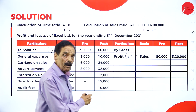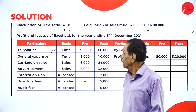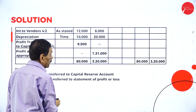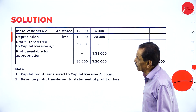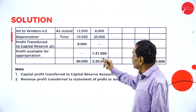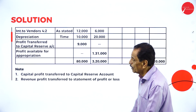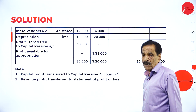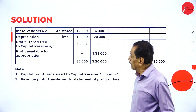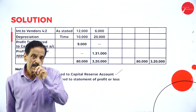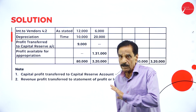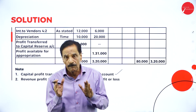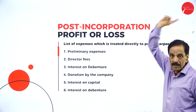After adding all figures: the difference gives 9,000 net profit for the pre-incorporation period and 1 lakh 31,000 for the post-incorporation period. The pre-incorporation profit is a capital profit and is transferred to Capital Reserve Account. The post-incorporation profit is revenue profit and is transferred to the Statement of Profit and Loss, which can be utilized for distribution of dividend to shareholders. Capital profit must not be used for dividend distribution.